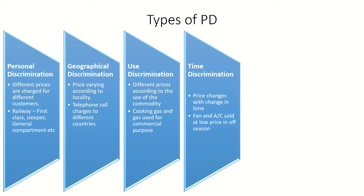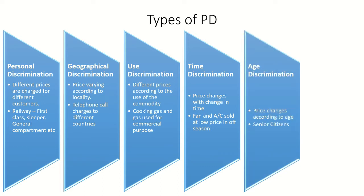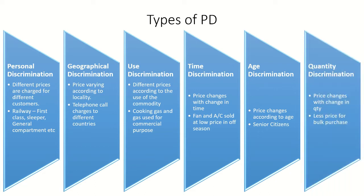Time discrimination means prices change according to time, such as seasonal variation. For example, fans and ACs are sold at lower prices in the off-season. Age discrimination means prices change according to age — for example, services provided to senior citizens are less expensive. Quantity discrimination means when we buy in bulk we get more discount than in retail purchase.